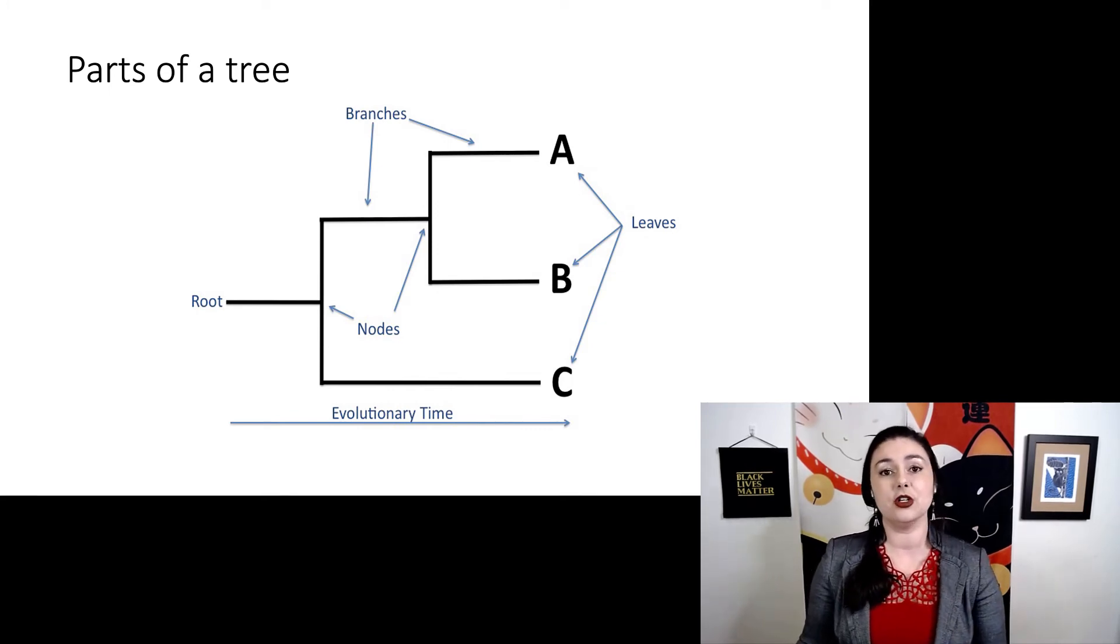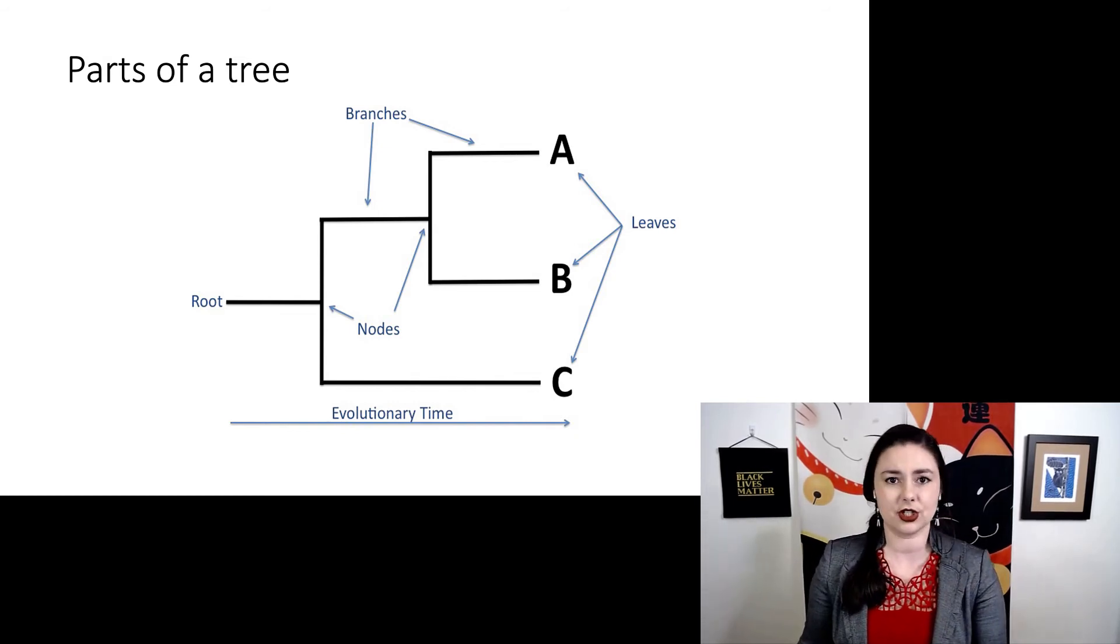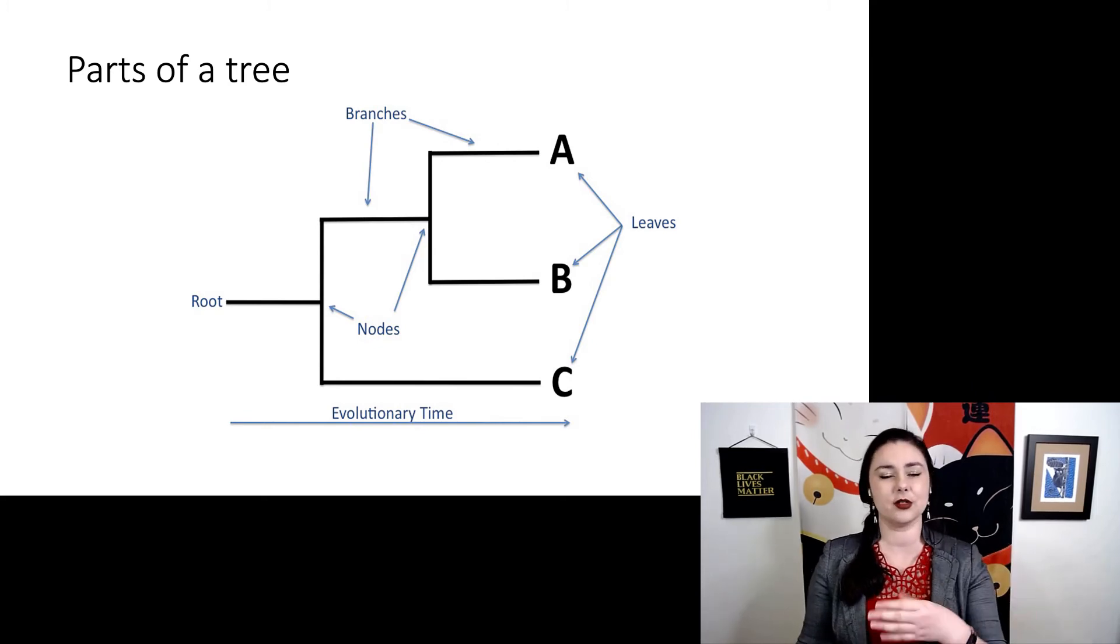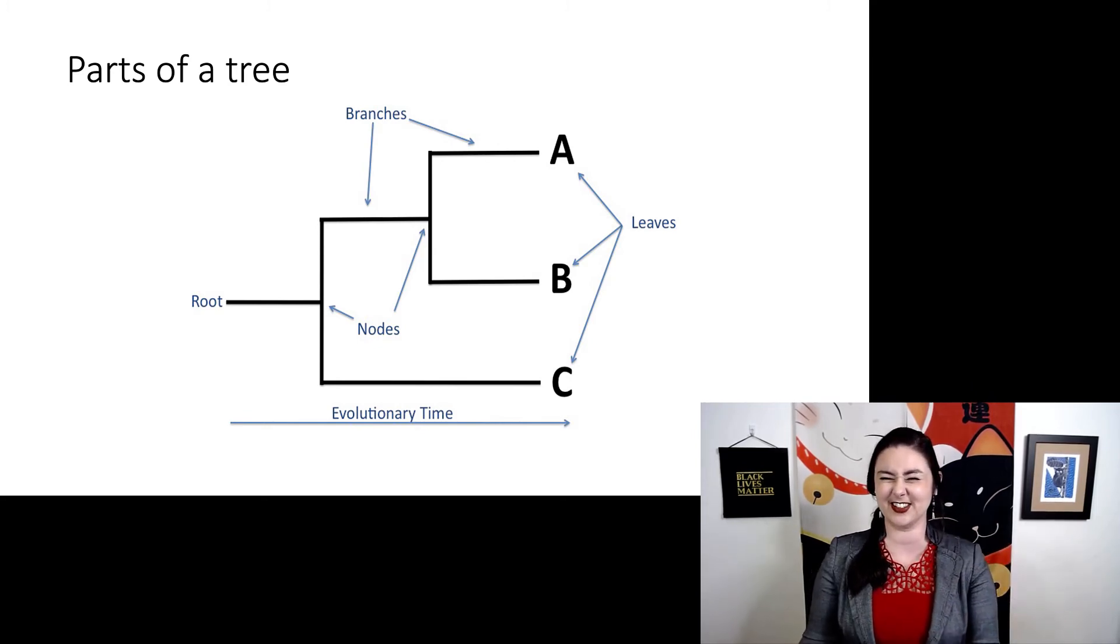Everything in the middle, the branches and the nodes, this is our hypothesis or inference about what we think happened. Those nodes, those are hypothetical ancestors. So we think A and B are closely related, so hypothetically they would have had an ancestor that would have been at about this time. And the branches simply connect all of our nodes, and that would be a hypothetical lineage moving from point A to point B.